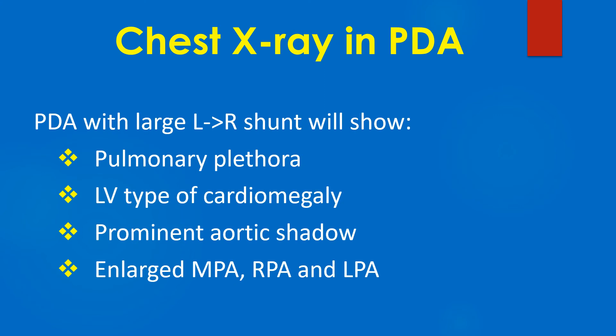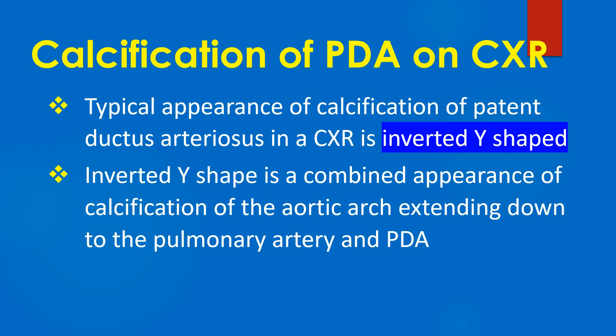PDA with a large left-to-right shunt will show pulmonary plethora, left ventricular type of cardiomegaly, prominent aortic shadow, and enlarged main pulmonary artery and branch pulmonary arteries on chest X-ray. The typical appearance of calcification of PDA in a chest X-ray PA view is an inverted Y shape. This inverted Y shape is a combined appearance of calcification of the aortic arch extending down to the pulmonary artery and PDA.